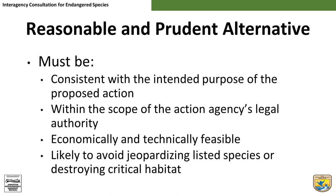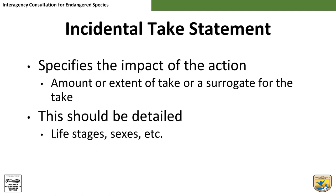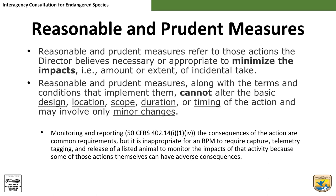Most often, the conclusion will be that the proposed action is not likely to jeopardize listed species or destroy or adversely modify their designated critical habitat. Therefore, most biological opinions do not contain reasonable and prudent alternatives. In these biological opinions, following the conclusion statement will be an incidental take statement. The incidental take statement identifies the amount or extent of take likely to occur as a result of the action, identifying life stages affected and the form of take anticipated. In some cases, it may not be possible to identify the amount or extent of take, so an appropriate surrogate should be identified. The services may then identify reasonable and prudent measures to minimize the amount of take, implemented through terms and conditions — specific directions about how to achieve the reasonable and prudent measures.